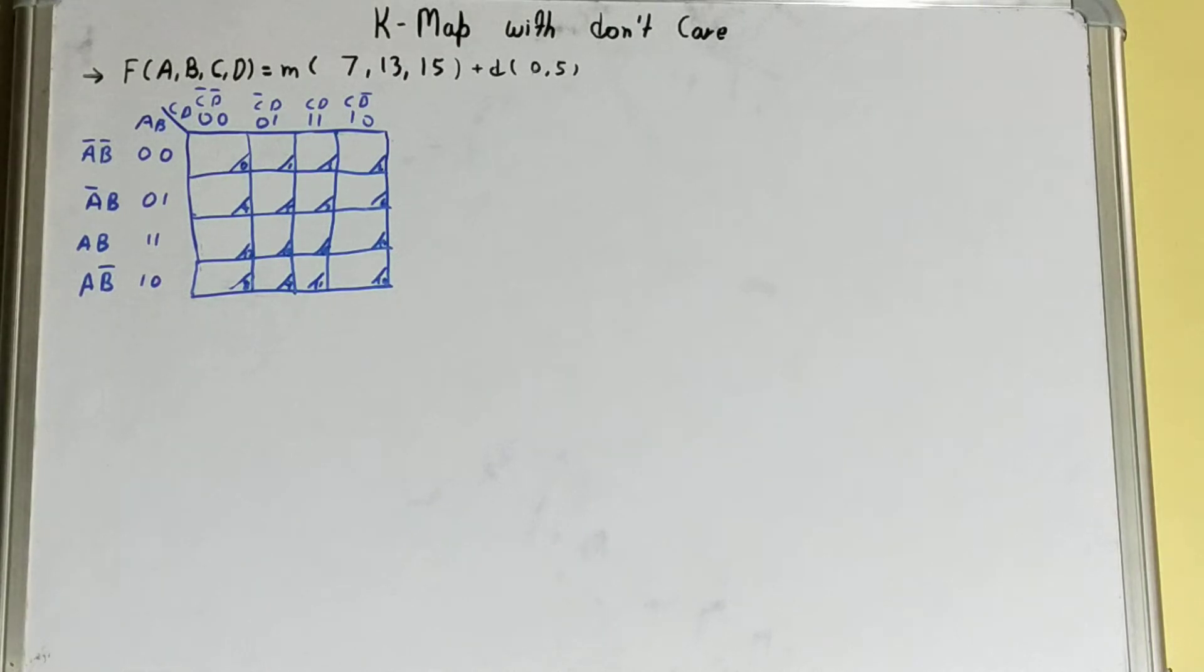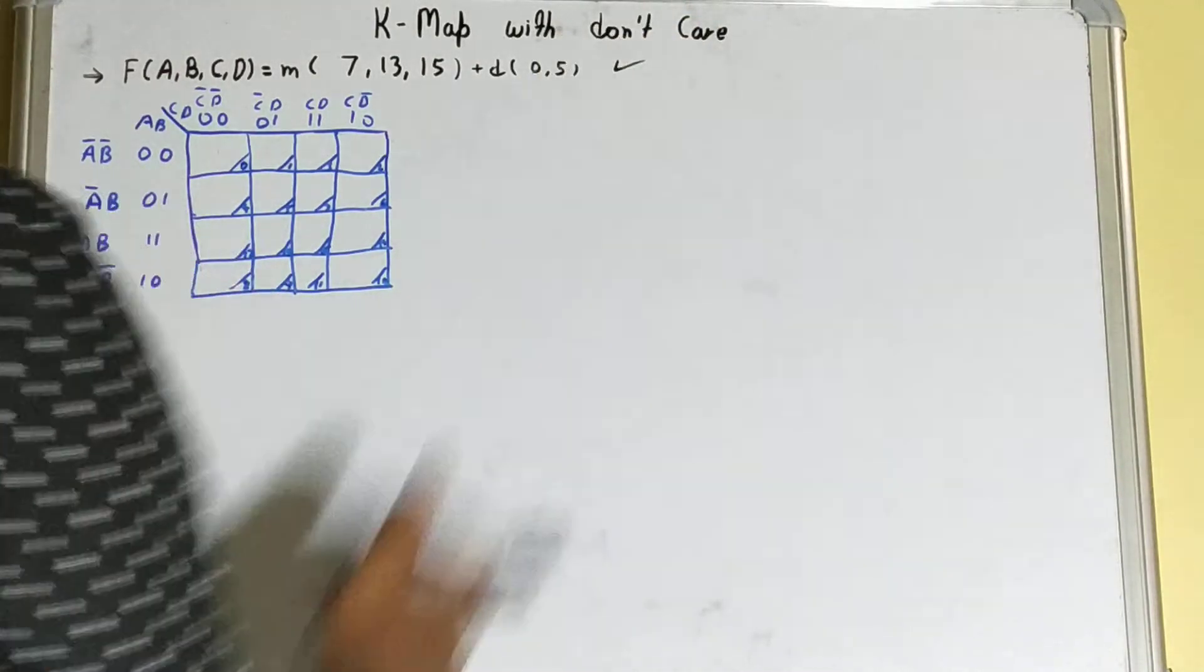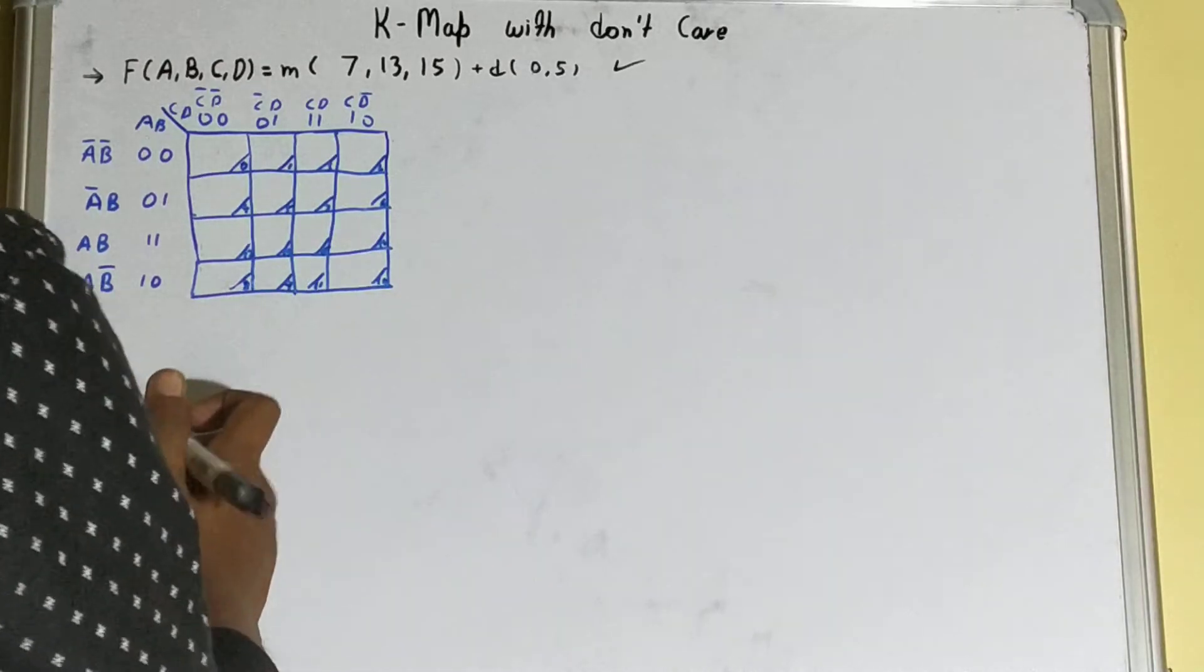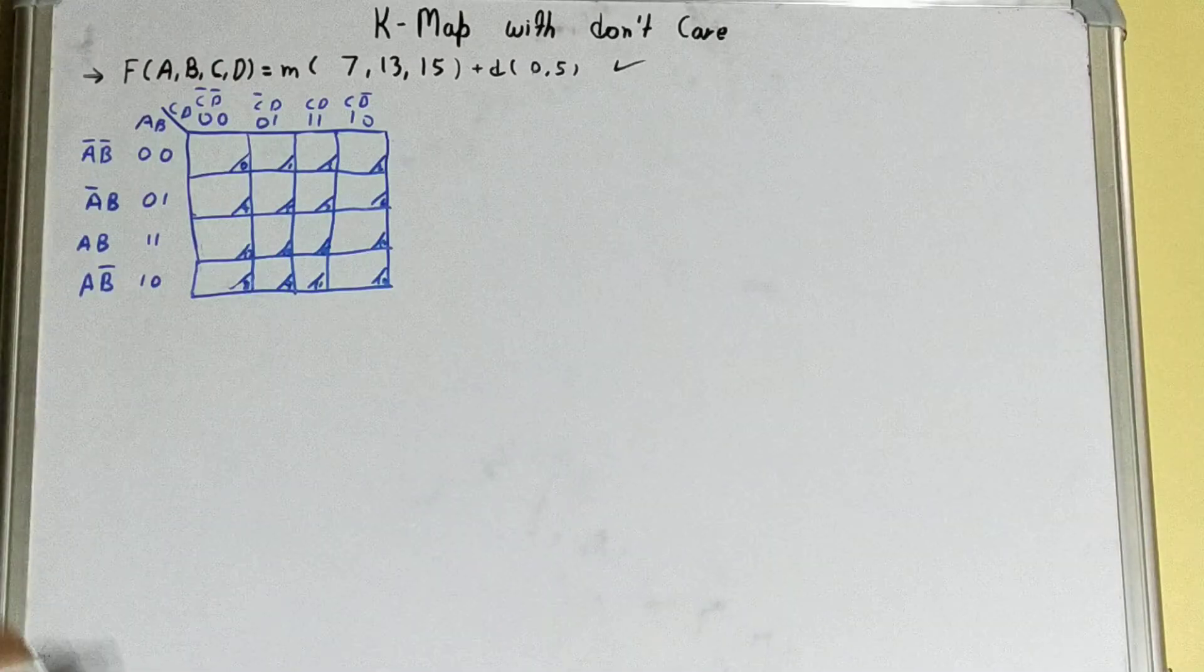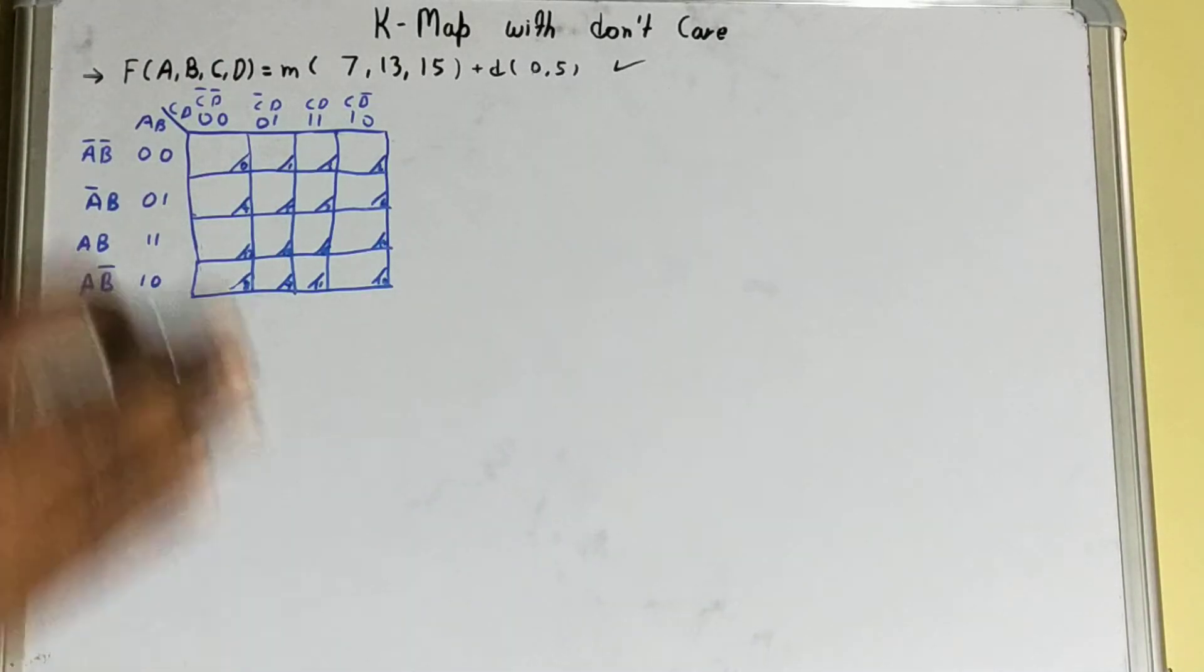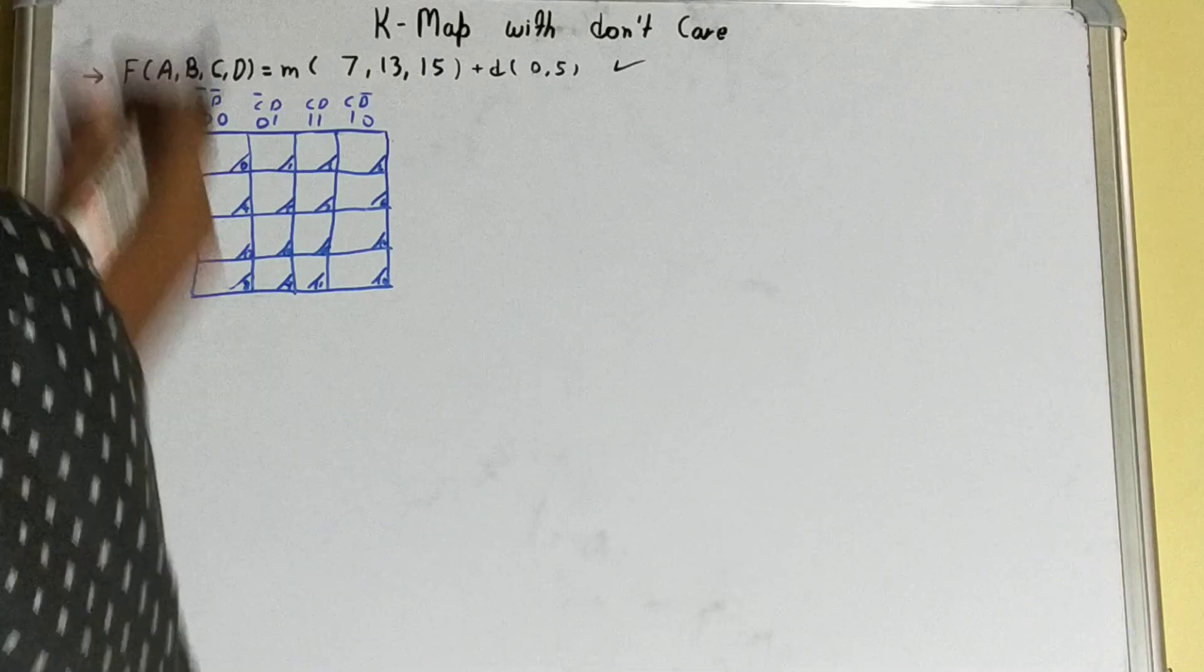Now let's see how it works quickly. We have a small question over here to make your concept clear with don't care. So we have your minterm set 7, 13, 15. We'll mark it. This is your K-map plotting. I hope you are clear. If not, you can watch my previous video on K-map and then come to this video.